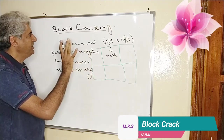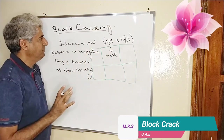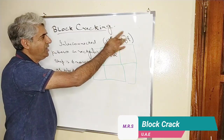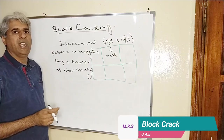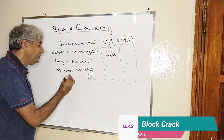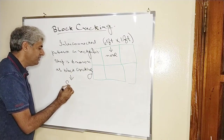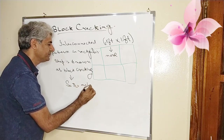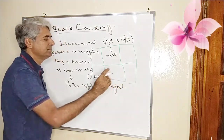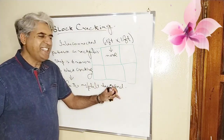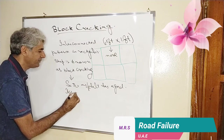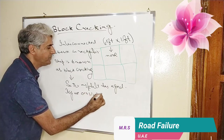This definition is very easy to understand: an interconnected pattern in a rectangular shape is known as block cracking. Its dimension is one foot by one foot or it can be more. Whenever you see such a type of cracking on the road, keep in mind that the asphalt has aged — these cracks are occurring on old asphalt pavement.